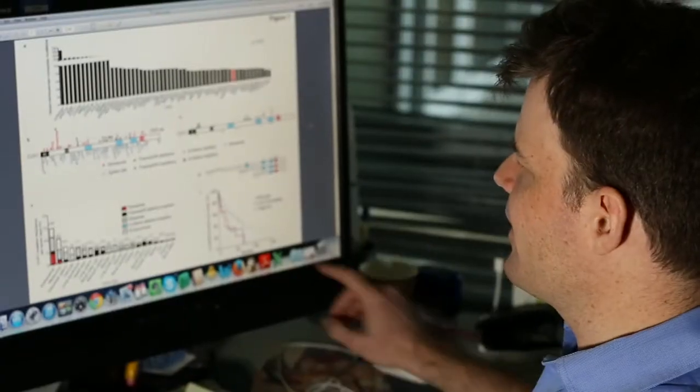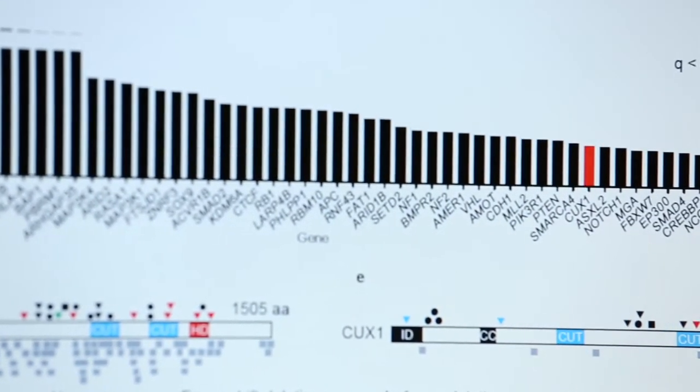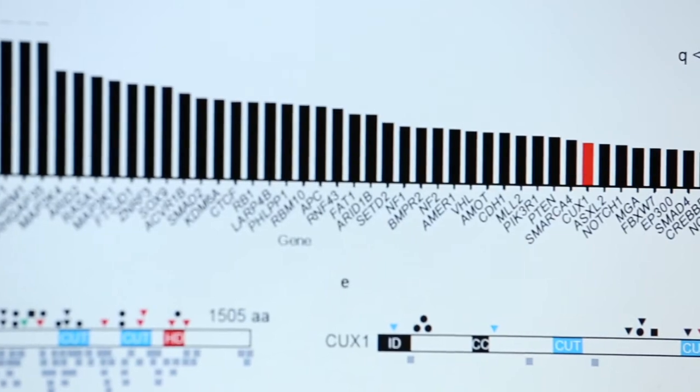This is a wonderful example of where the community has all contributed to this study. Different types of cancers have been sequenced at different places throughout the world and we were able to obtain that data, which is now freely available, and to analyse it to come up with the gene CUX1 as being a new cancer gene. What we did was to bring together the genomes of 7,600 cancers and to ask the question: are there any genes within that set of cancers that are mutated more than we would expect by chance?